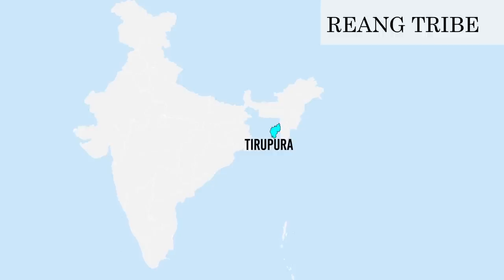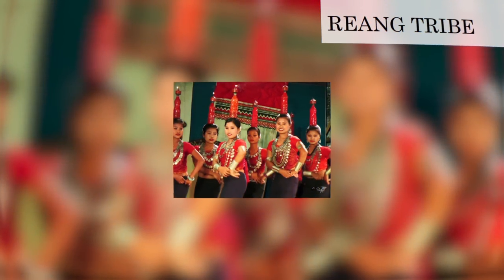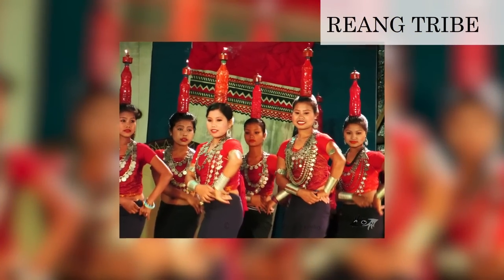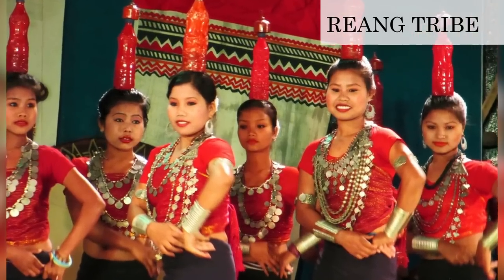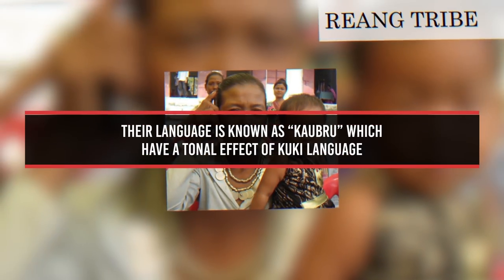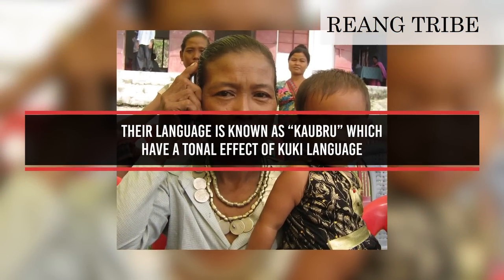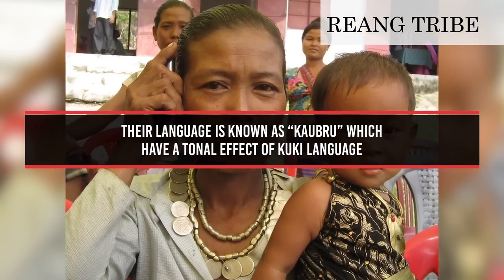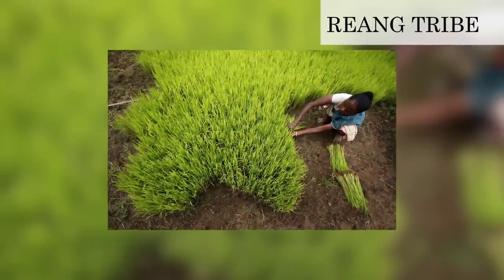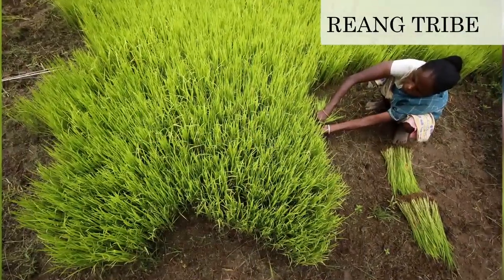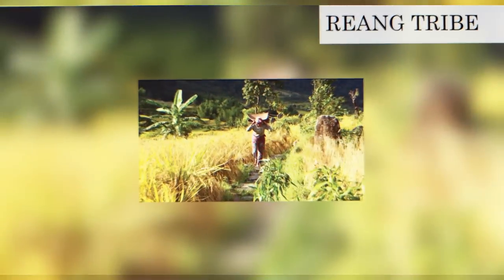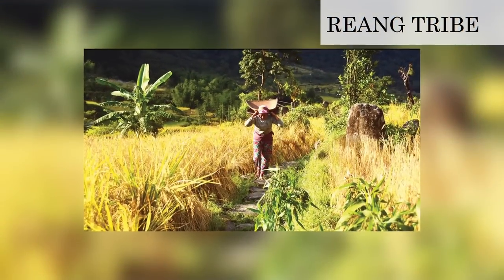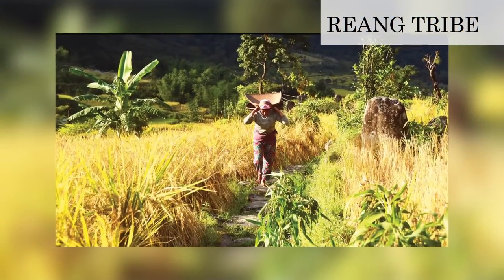Riyanak Tribe: they are the second largest tribal community of Tripura. They are said to have first come from the Shan state of Upper Burma and belong to the Indo-Bengalic racial stock. Their language is known as Kubru, which has a tonal effect of the Kuki language. Riyanak Tribe is nomadic in nature and a large number among them maintain their livelihood through shifting hill jhum cultivation, food gathering, fishing and hunting.